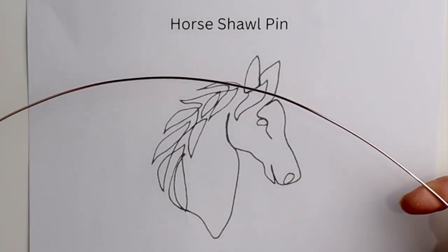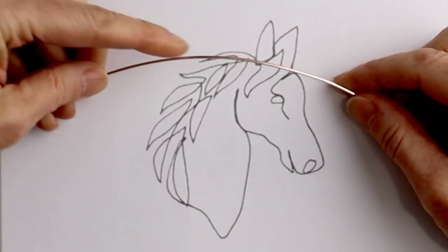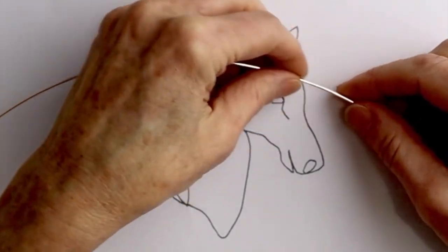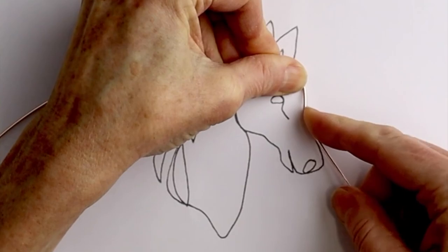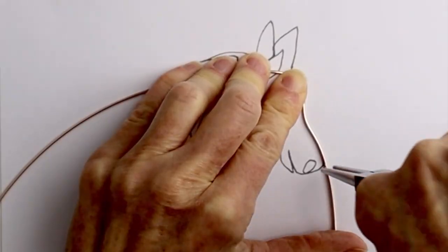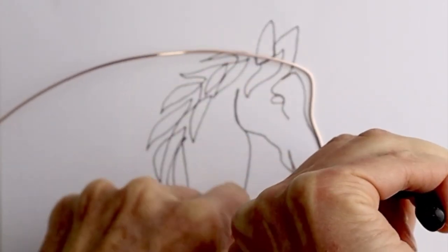I have a 36 inch piece of 16 gauge wire and I'm going to trace the template. My wire ended up being a little bit long, so you can cut a shorter amount.